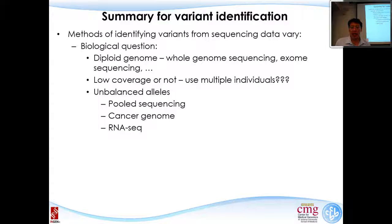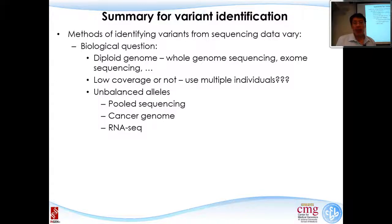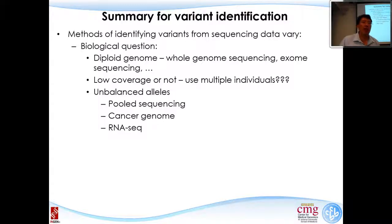In summary, there are many different methods to identify genetic variants, and the appropriate choice depends on the biological question and experimental design—whether it's a diploid germline genome, pooled sequencing, cancer somatic analysis, or RNA sequencing, as the analysis methodologies differ substantially. Next time, Dr. Dongbin Lai will lecture on statistical genetics. After that, one more lecture will cover variant prioritization and structural variation.